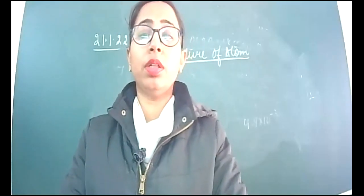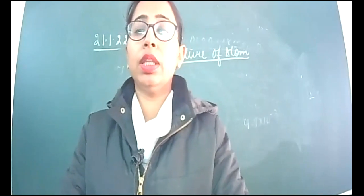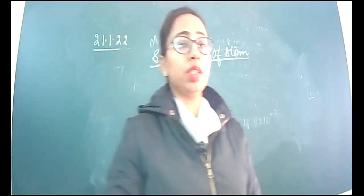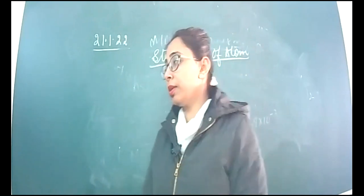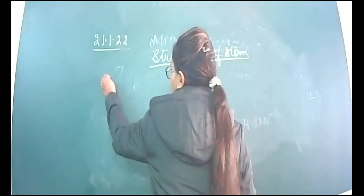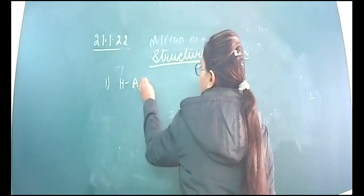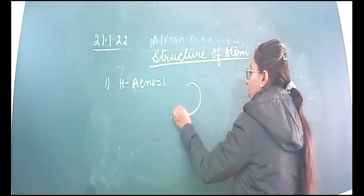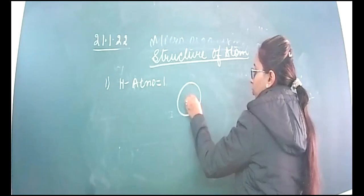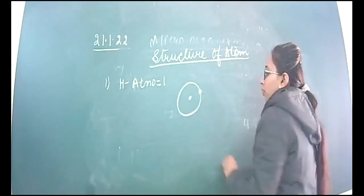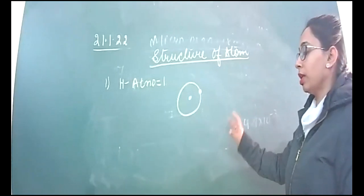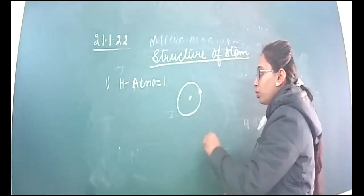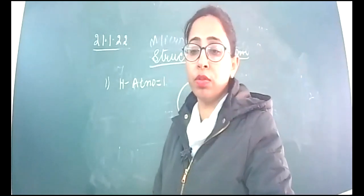So today we are going to start with the filling of electrons in the different orbits. How is the atomic structure distributed? I'll draw a few and then you will draw. Starting from hydrogen, which has atomic number 1, you will draw like this - it is an orbit, this is the nucleus. You will draw with the compass, so this you will be doing in this class only.